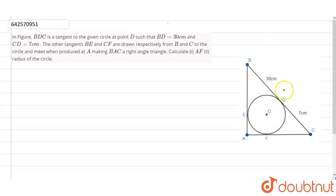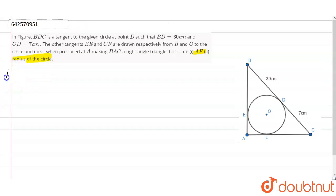Triangle ABC is a right angle triangle with BAC as the right angle. We have to calculate AF and the radius of the circle. So let's take AF equals to x, since this is what we have to find first.